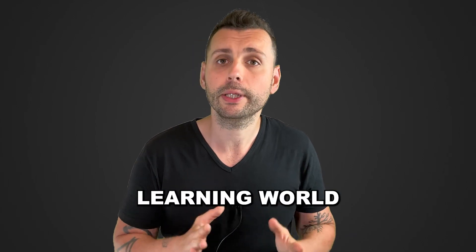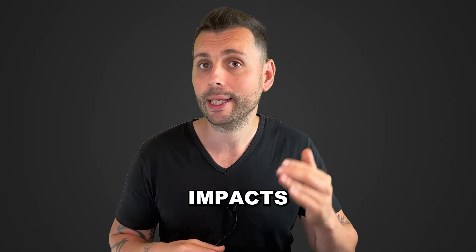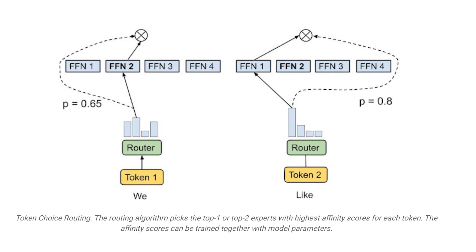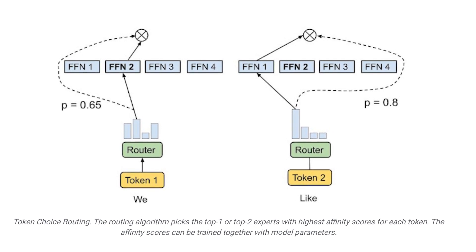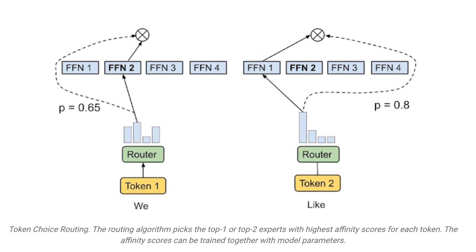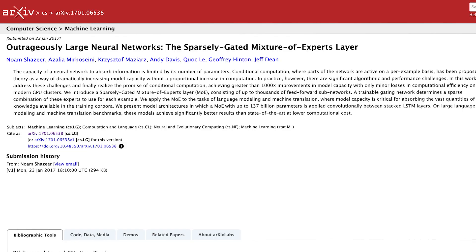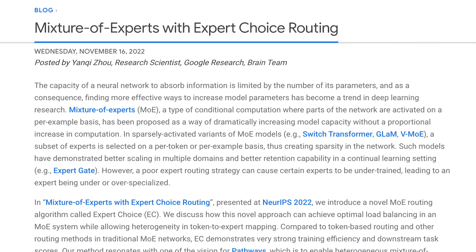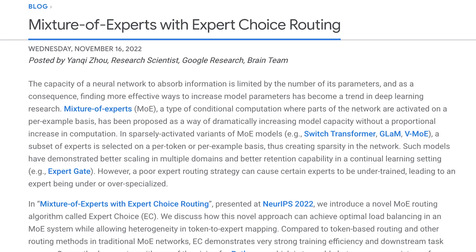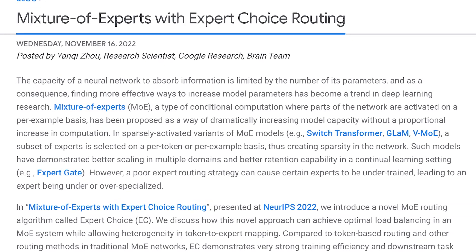Now remember, in the deep learning world, the parameter count directly impacts the model's capability. But the conditional computational method they used is what is truly interesting. It's called Mixture of Experts, or MoE — a type of neural network architecture that utilizes conditional computation to increase model capacity.